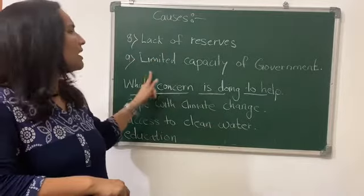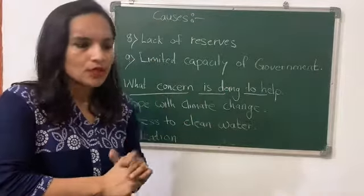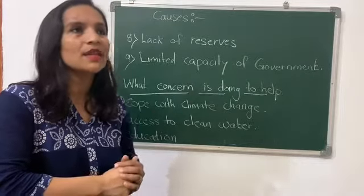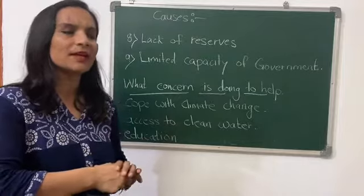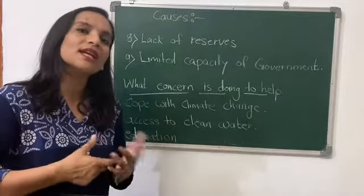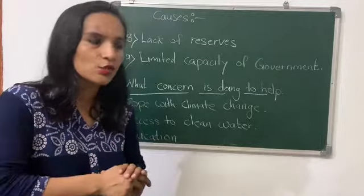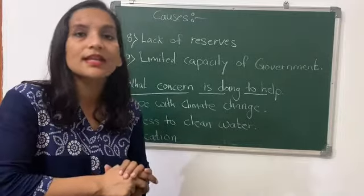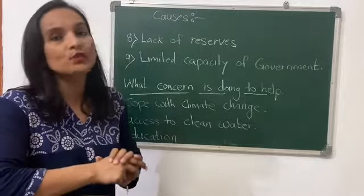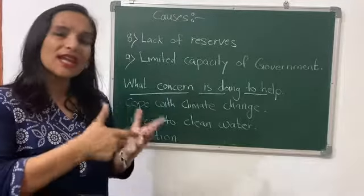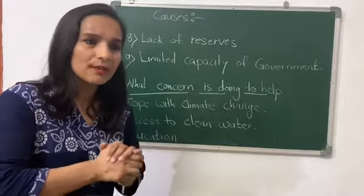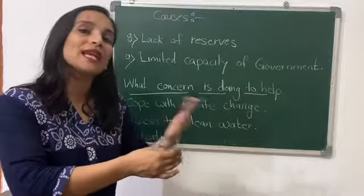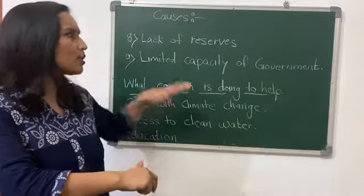The ninth cause is the limited capacity of government. In places like the United States, there is social welfare and food availability support. But not all governments are strong enough to provide these things to their people. All countries' governments are not equally capable, so this is also a reason for poverty that cannot be entirely blamed on individuals.